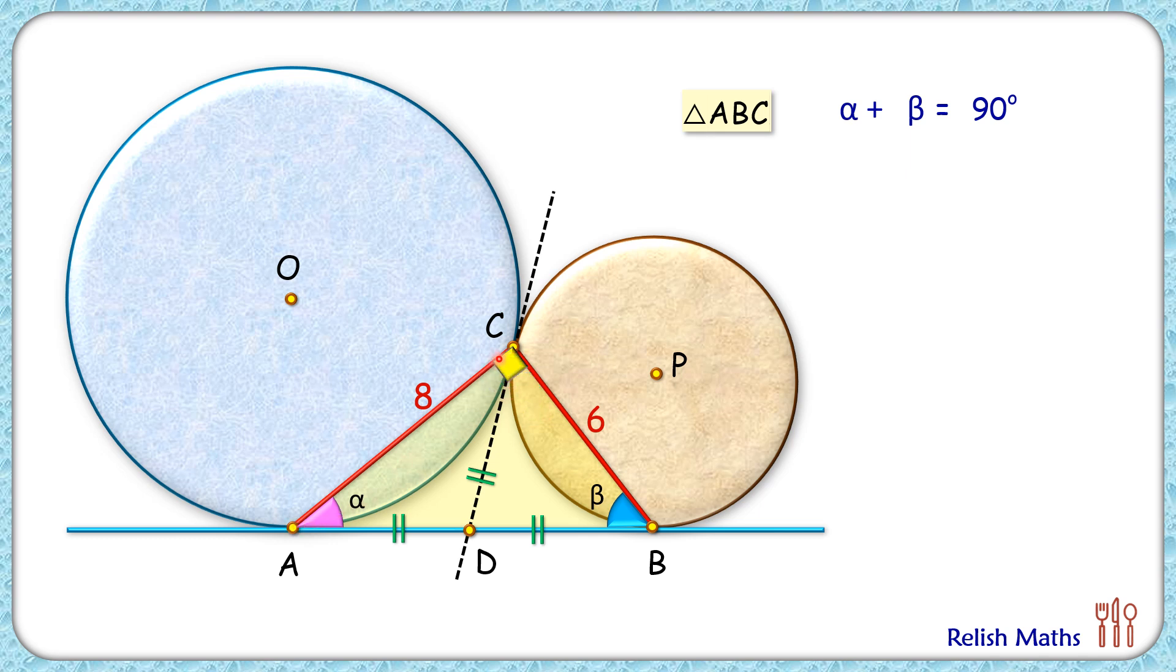Now here this is a right angle triangle, so applying Pythagorean theorem we get AB square is 8 square plus 6 square. Solving it, we get AB as 10 centimeter.